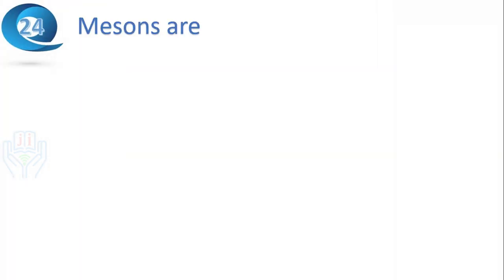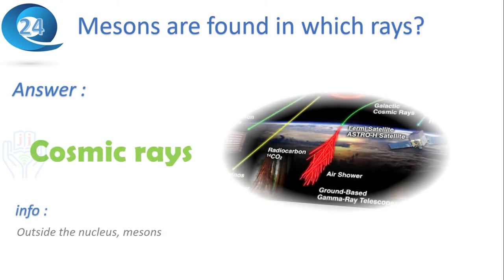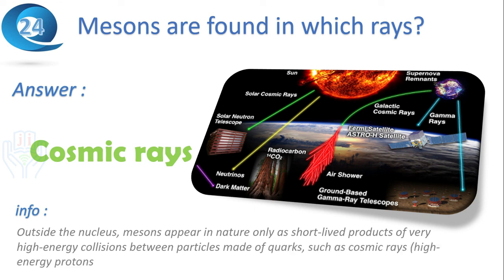Next question: mesons are found in which rays? Answer: cosmic rays. Outside the nucleus, mesons appear in nature only as short-lived products of very high-energy collisions between particles made of quarks, such as cosmic rays — meaning high-energy protons and neutrons — and baryonic matter.